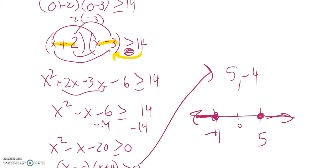So that means this must work and this must work. So X is less than negative 4 or X is greater than or equal to 5. And there's my solution.